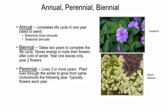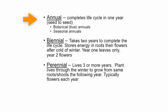Plants can also be grouped according to their life cycles, as annuals, biennials, or perennials. Annual plants complete their life cycle in one growing season. Biennial plants in two seasons. Perennial plants live three years or longer.